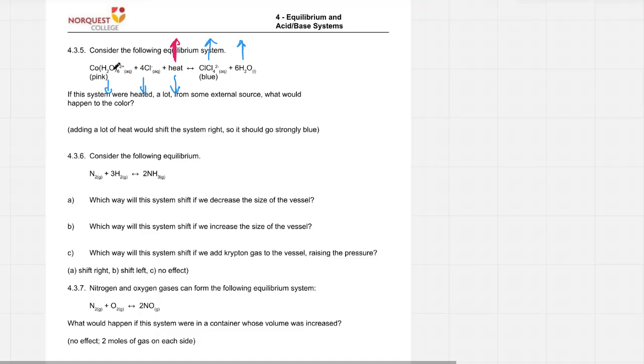What would happen to the color? Well, we're losing left-side, so we're losing pink color, and we're producing more blue. So the color, if it was pink, it should shift from pink towards blue.